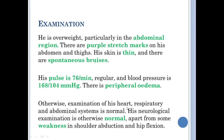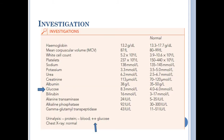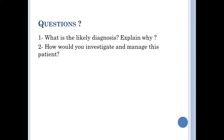Otherwise, his heart, respiratory, and abdominal systems are normal. His neurological examination is otherwise normal, apart from some weakness in his shoulder abduction and hip flexion. By investigation, we found that his CBC and renal tests are normal. Liver enzymes and bilirubin level are normal. Gamma-glutamyltranspeptidase level is normal. The only abnormal finding was glucose — he had hyperglycemia, and by urine analysis we found glycosuria. Chest X-ray was normal as well.